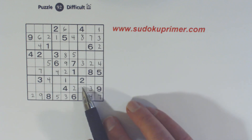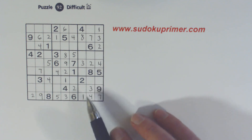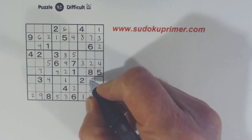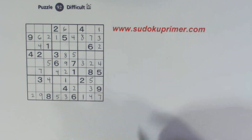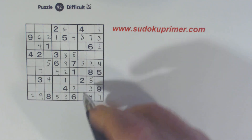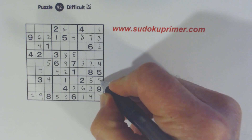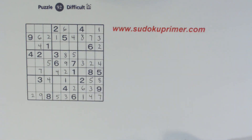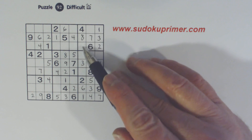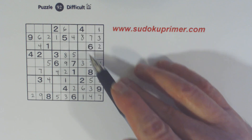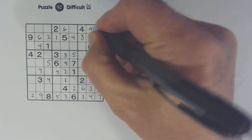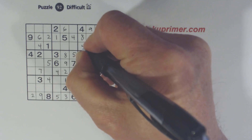We've got 6-8 twins here, so we know that's a 5 — the only number left — then we can solve the 6 and 8. Now we have 5-9s left in box 3, so we know that's a 9 and that's a 5.